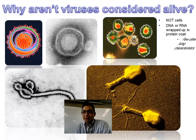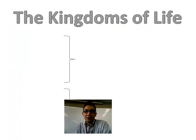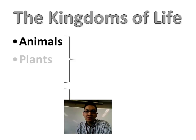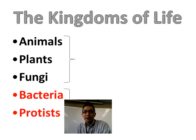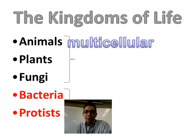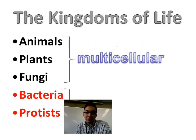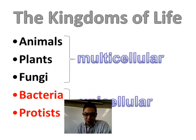Viruses are not cells — just DNA or RNA wrapped up in protein, with few other living characteristics, and they require a host to survive. Living things can be separated into five kingdoms in general — though online you may find six, because bacteria is sometimes split into two categories. Animals, plants, and fungi are multicellular — made up of many different types of cells. Bacteria and protists are unicellular, or single-celled organisms.